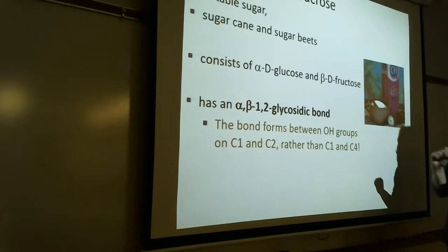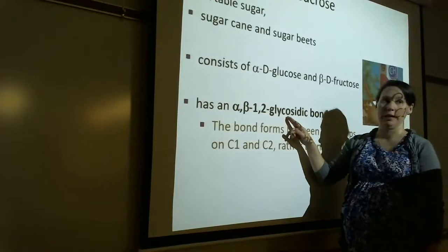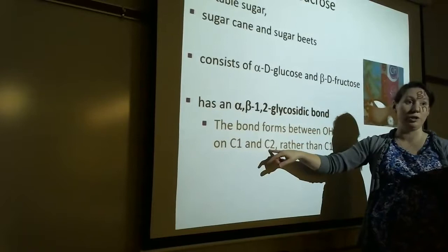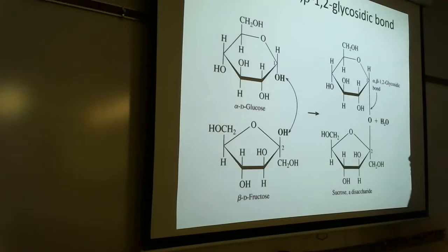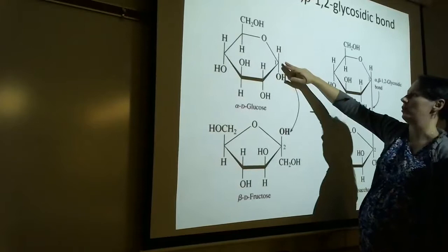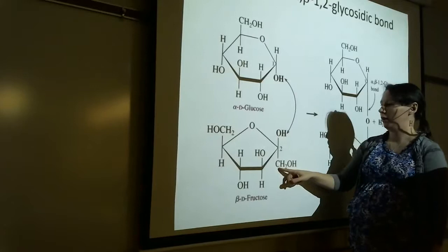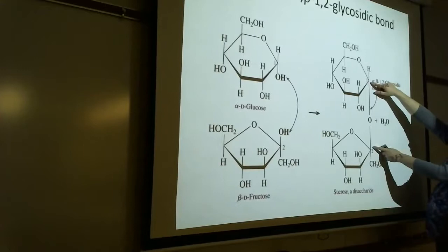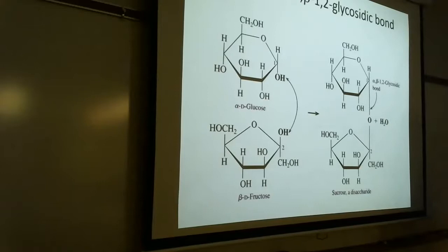The neat thing about sucrose is it actually has an alpha-beta-1,2 glycosidic bond. It's unique. Alpha-beta-1,2 glycosidic bond. So what does that 1,2 mean? It means it's forming between carbon-1 and carbon-2 as opposed to carbon-1 and carbon-4. So here's what it looks like. Here's carbon-1. And remember, glucose is a six-membered ring. Fructose is a five-membered ring. So 1 and then 2 because there's carbon-1 in fructose. Fructose is a ketose. So 1,2, there's carbon-2. Here's carbon-1. So it's occurring between 1 and 2. And we call it an alpha-beta-1,2 glycosidic bond. So that's one of the unique things about sucrose.